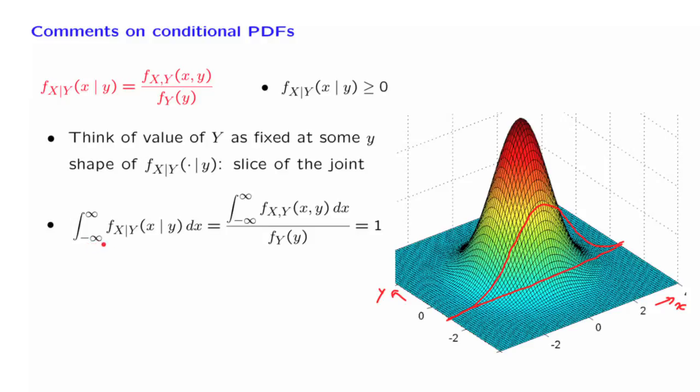So the numerator turns out to be the same as the denominator, and so we get a ratio of 1. Therefore, the conditional PDF for a given value of the random variable y behaves in all respects like an ordinary PDF. It is non-negative, and it integrates to 1.